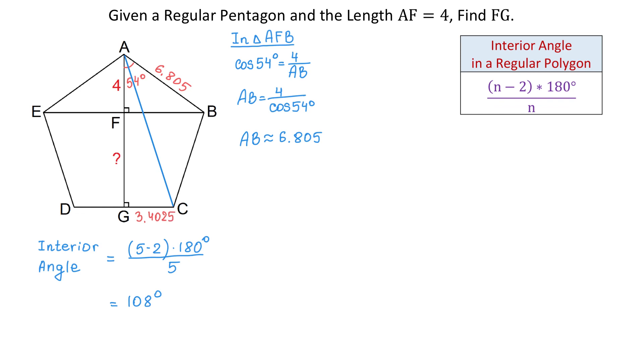If in this triangle we would know the hypotenuse AC, then we could find the side AG. So then, how can we find the hypotenuse AC? For this, we will use the triangle ABC and the law of cosines.